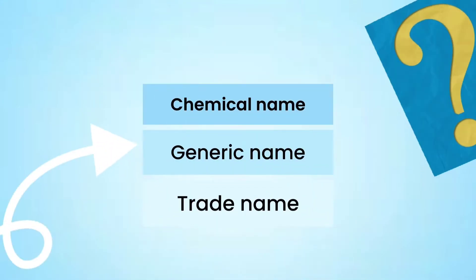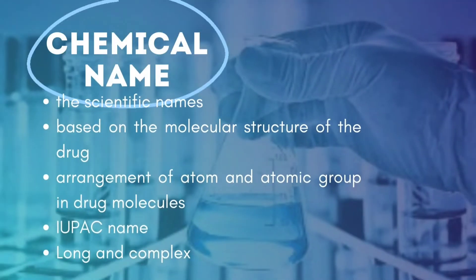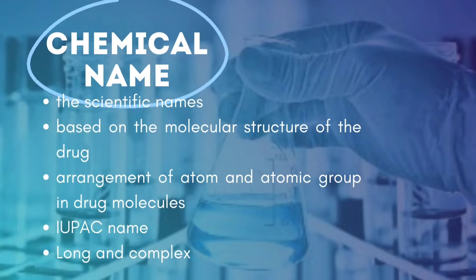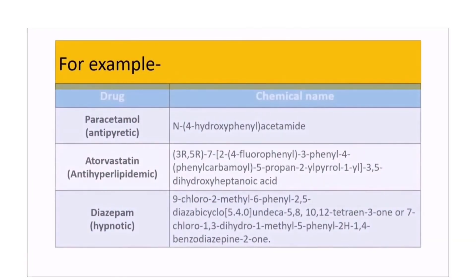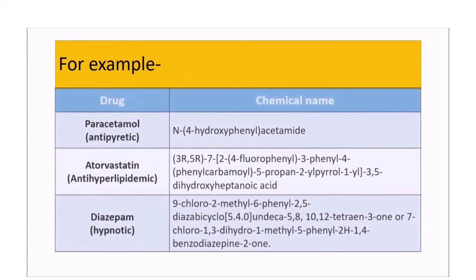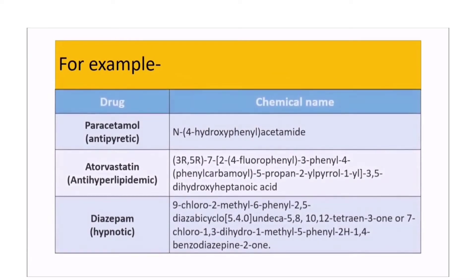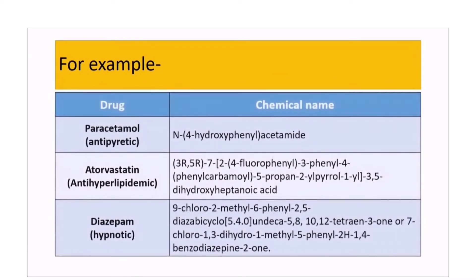Let's define chemical name, generic name, and trade name. Chemical name is the scientific name based on the molecular structure of the drug, arrangement of atoms and atomic groups in drug molecules. For example, the drugs paracetamol, atorvastatin, and diazepam each have a corresponding chemical name.